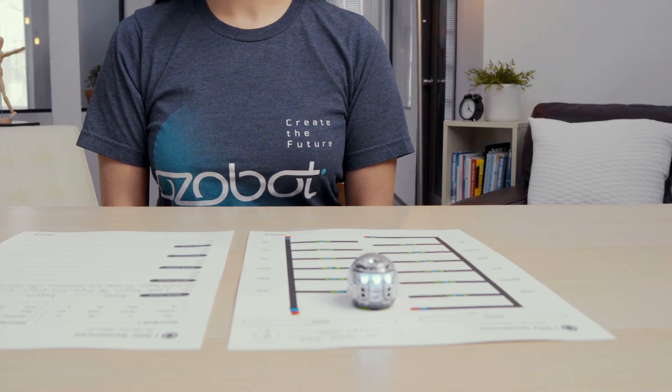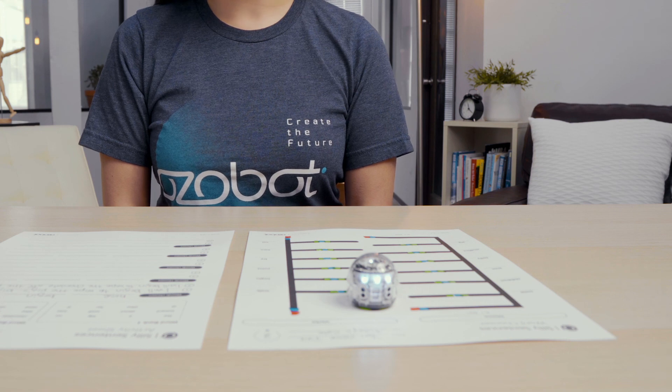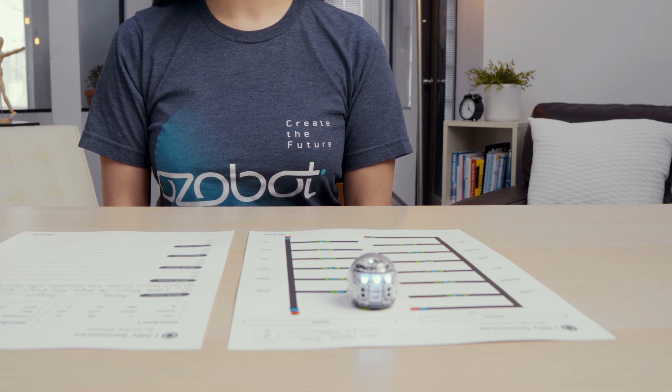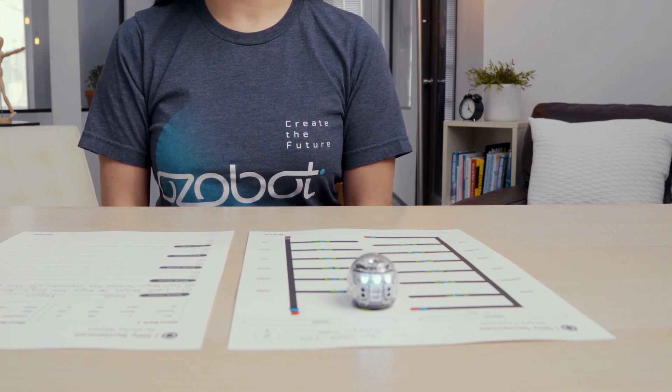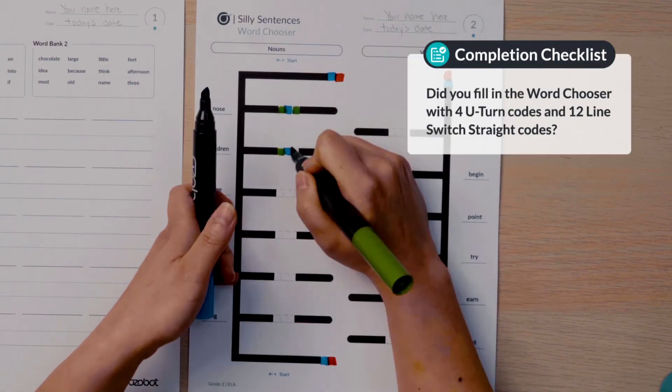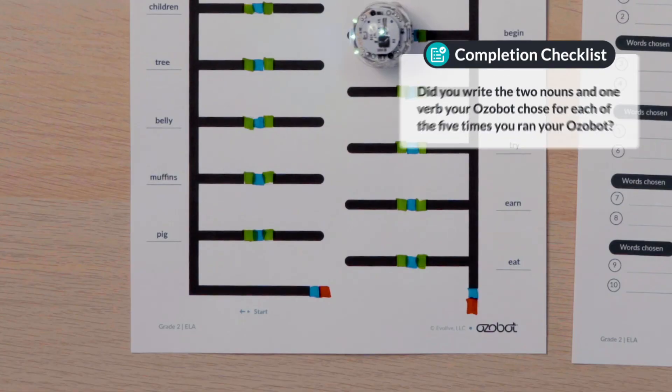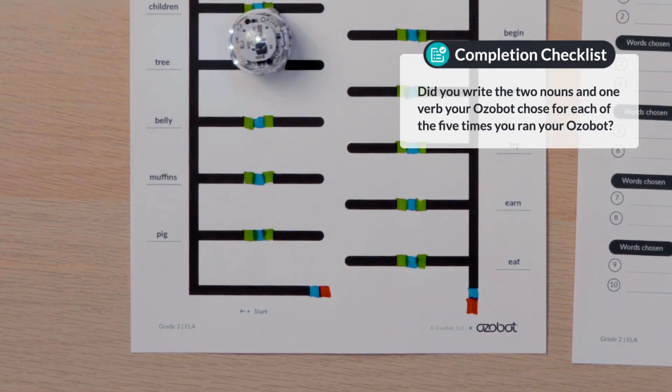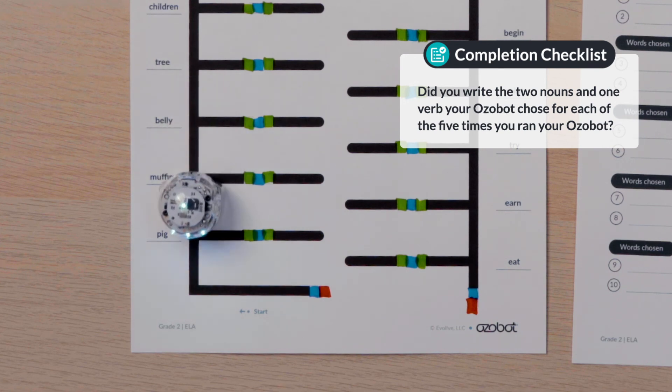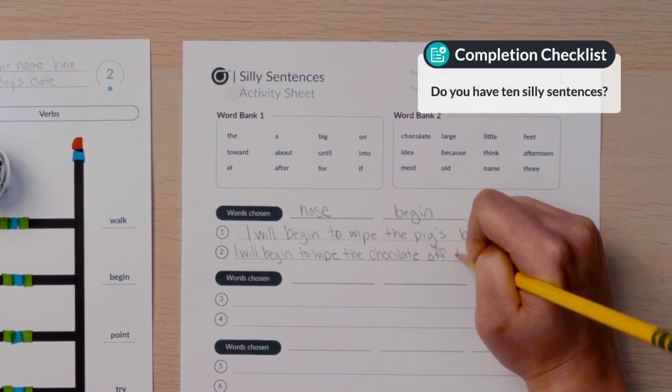Well done. I hope you had some great laughs at your sentences. Be sure you've completed this activity by answering the following questions. Did you fill in the word chooser with the four U-turn codes and the 12 line switch straight codes? Did you write the two nouns and one verb your Ozobot chose for each of the five times you ran your Ozobot? Do you have 10 silly sentences?